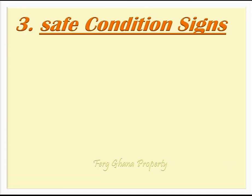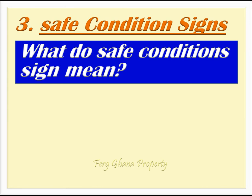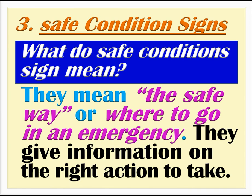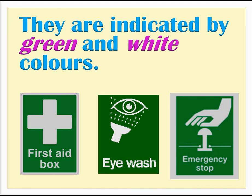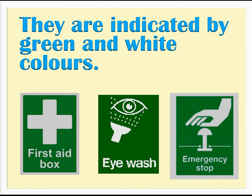Safe condition signs: What do safe condition signs mean? They mean the safe way or where to go in an emergency. They give information on the right action to take. They are indicated by green and white colors.